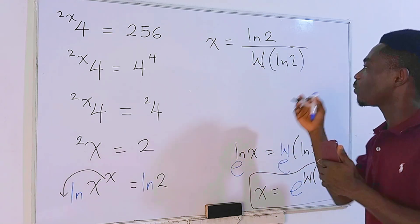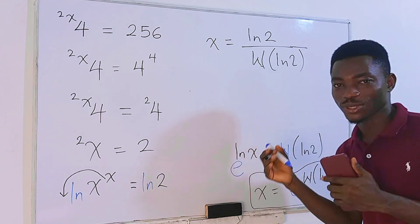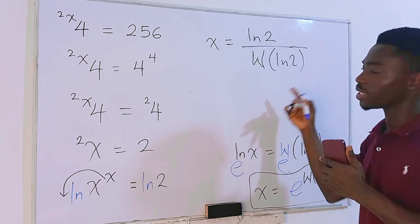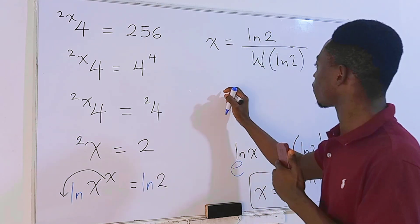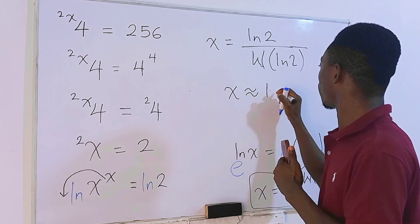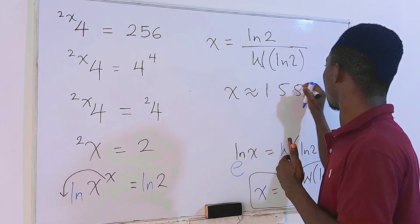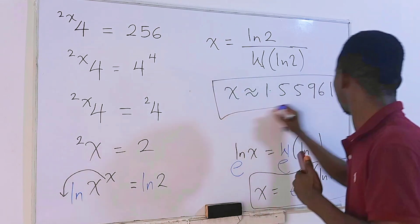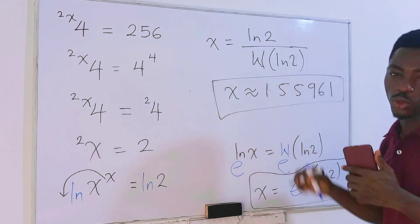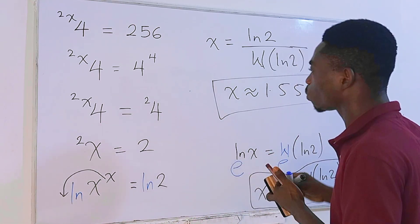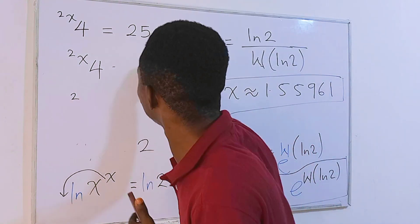Now, if you use a calculator for this, not any other calculator but Wolfram Alpha which can compute the whole of this, you'll get x approximately equal to 1.55961. This is what you are going to get. Those of you who don't know how to compute, I think I can help you out. In order for you to compute this one in Wolfram Alpha, let me show you really quick.